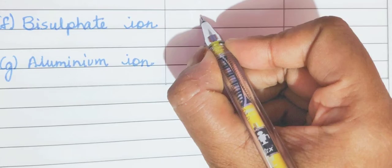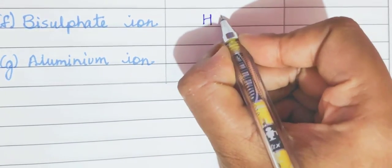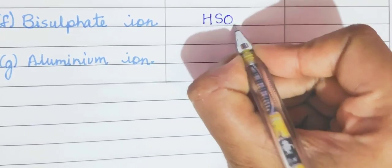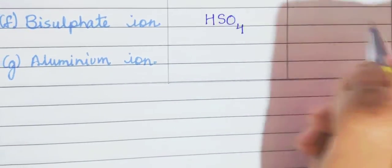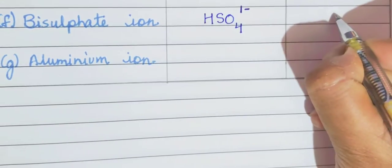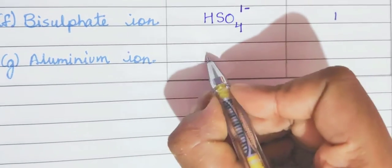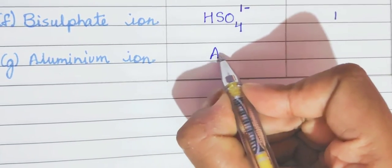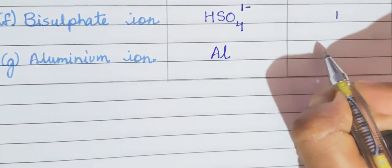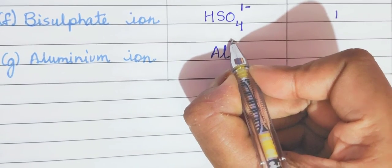Now next is bisulfate ion. So it is a radical. The formula of bisulfate will be HSO4. And its valency will be 1. Then comes aluminium ion. What is the symbol? It is AL. And what is the valency? It is 3 plus.